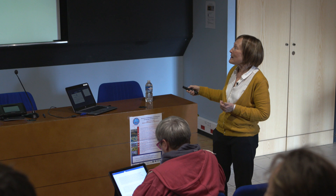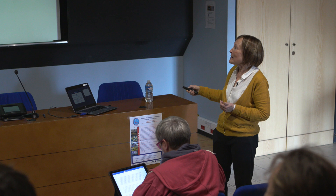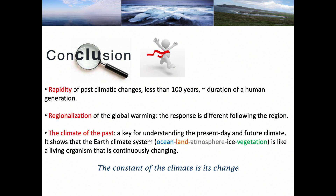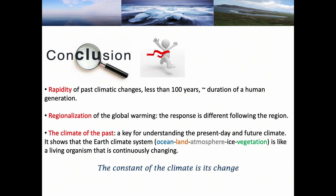The general conclusion is that rapid climatic changes occur on less than 100-year timescales — within a human generation. There is an important regionalization of global warming, with different responses following the region — this is the main concern of the IPCC today. Climate of the past is a key for understanding present and future climate because we are dealing with feedback processes that operate without anthropogenic impact in the natural climate system. The Earth's climate system is like a living organism, continuously changing — the constant of climate is change. Thank you very much.